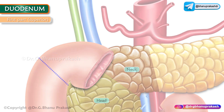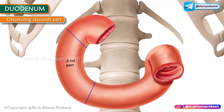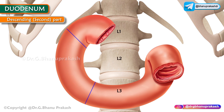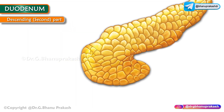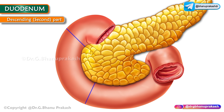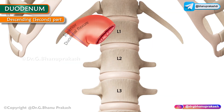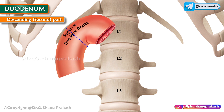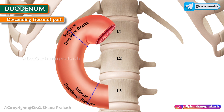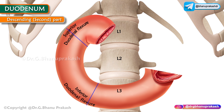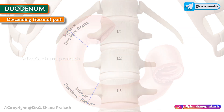The second part, or descending part of the duodenum, is longer — 7.5 centimeters — and descends along the right side of L1 to L3. It begins at the superior duodenal flexure, passes downwards towards the lower border of L3, and curves to the left at the inferior duodenal flexure to become continuous with the third part of the duodenum.